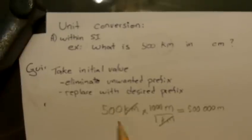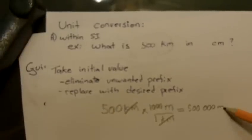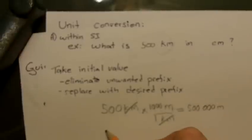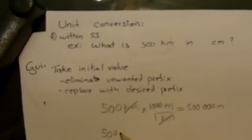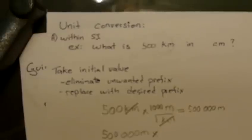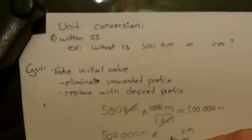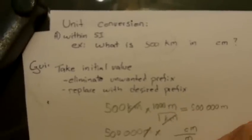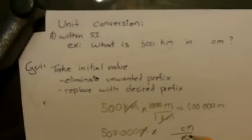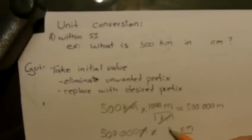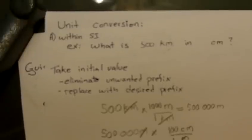The second step is to replace the base with your desired prefix. So we take our 500,000 meters. Again, we multiply it by a fraction. We want to get rid of the meters and replace it with centimeters. That way, the meters will cancel out. But of course, to make this mathematically viable, this fraction has to be one. So we have 100 centimeters in one meter.